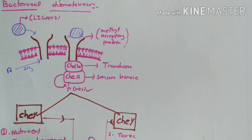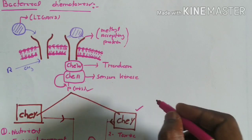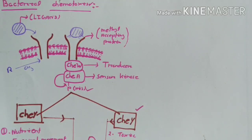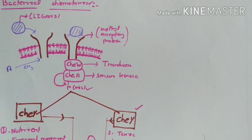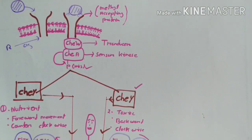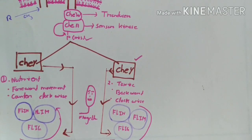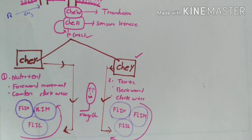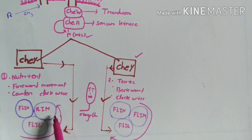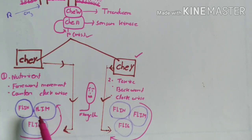After the autophosphorylation, CHEA activates CHEY, which in turn activates a protein complex known as FMS, or flagellar motor switching protein. The FMS consists of three proteins: FliN, FliM, and FliG.